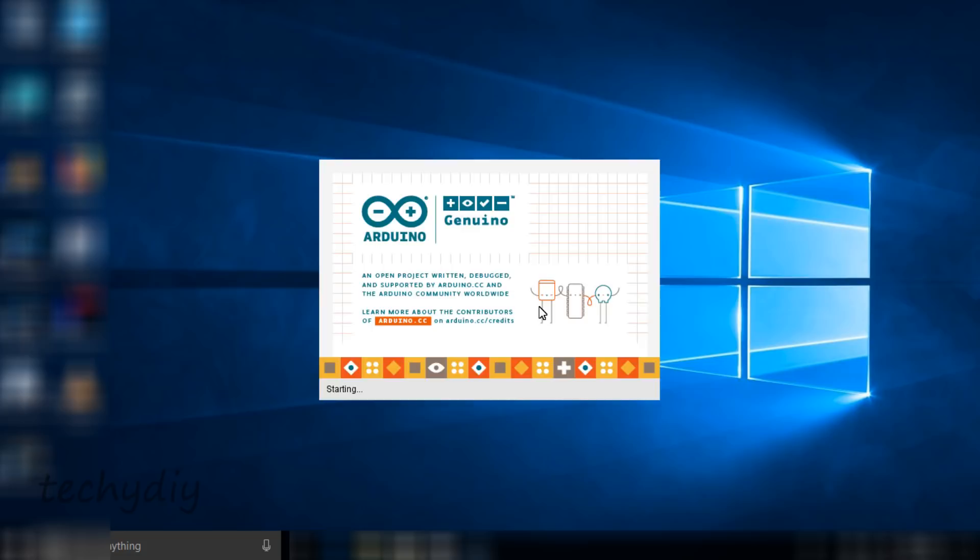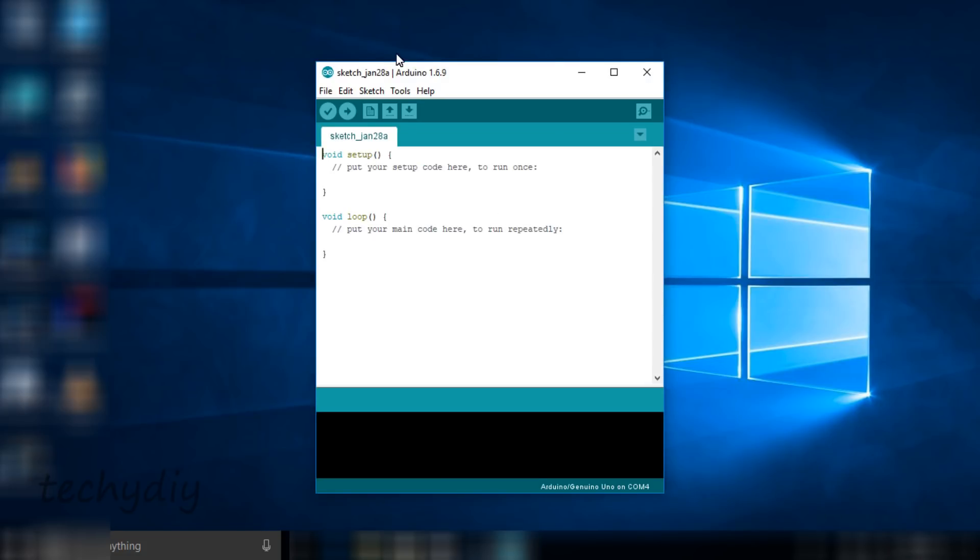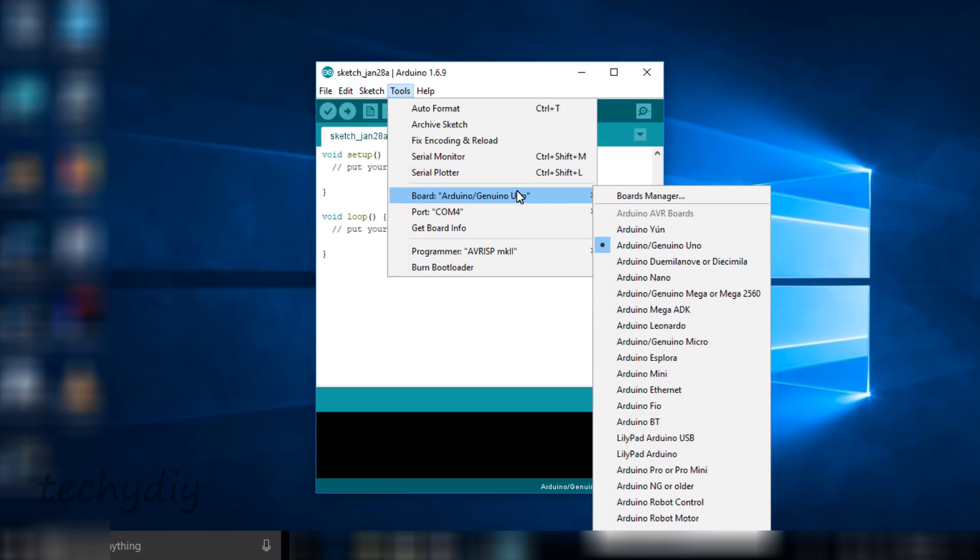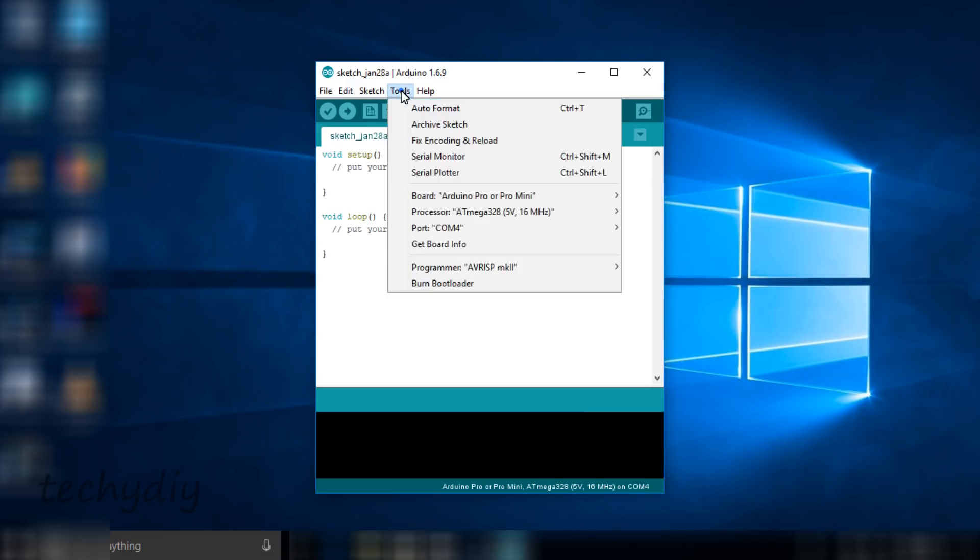Next the Arduino IDE software is loaded. Configure the board type by selecting tools from the menu. Select board and then Arduino Pro or Pro Mini. And then select tools again. Port to check the COM port selected. And processor where we can select the type of processor, its voltage and speed. In this case I'm using an 8MHz 3.3V Pro Mini.